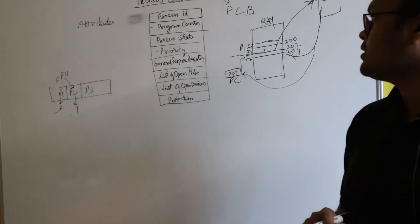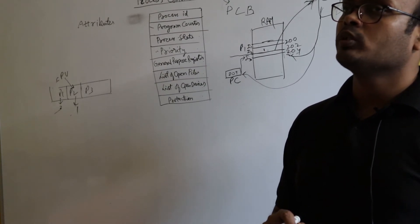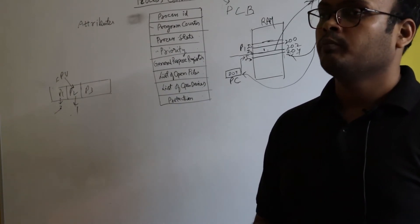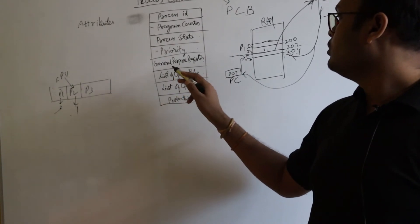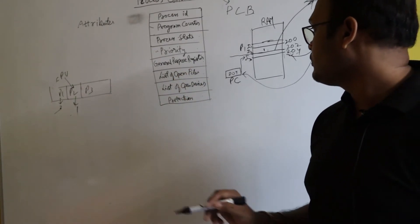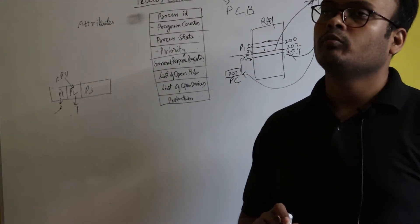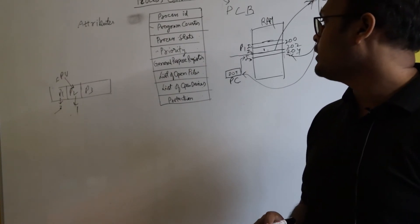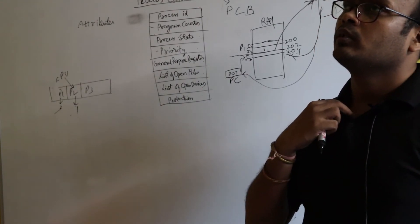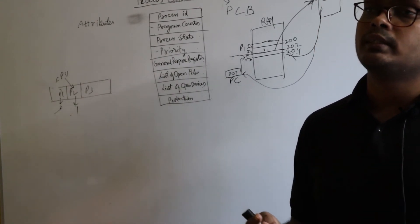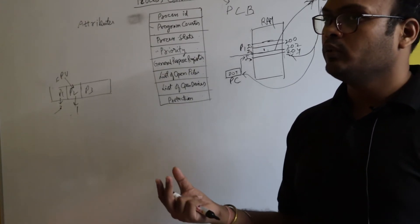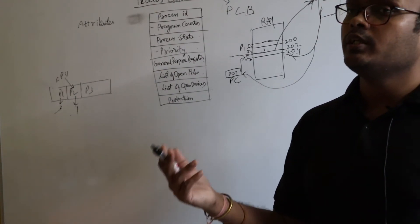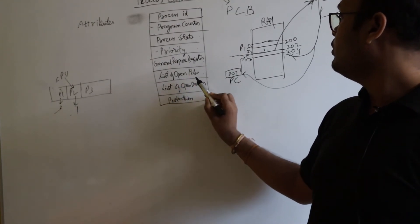The fifth attribute is general purpose registers. When a process runs, it uses several registers — program counter is also a register — and there are many other registers the CPU uses; these are called general purpose registers. The sixth attribute is list of open files and list of open devices. While running, if process P1 needs to access a file or a hardware device, the information about which files and devices were opened by P1 is stored here.